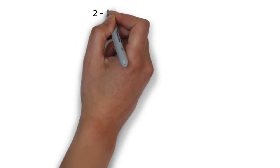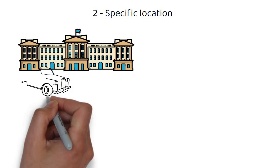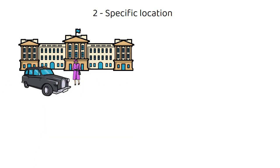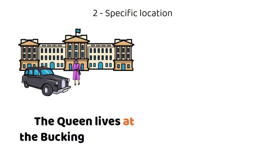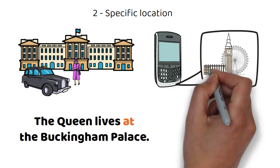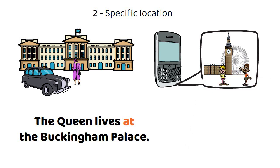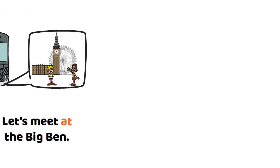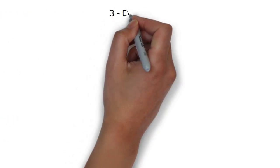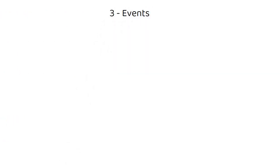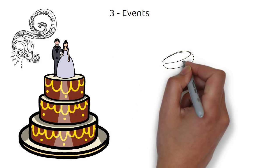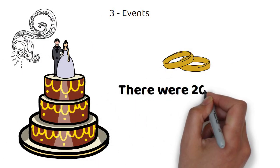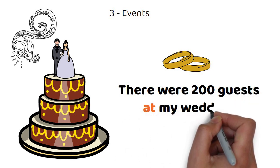Number two: specific location. For example, the Queen lives at Buckingham Palace. Or, let's meet at the Big Ben. Number three: events. For example, there were 200 guests at my wedding.